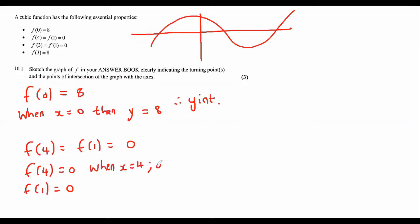then y is 0. That is an x-intercept. When y is 0, we call that an x-intercept. And this is also an x-intercept. When x is equal to 1, then y is 0. That's another x-intercept.